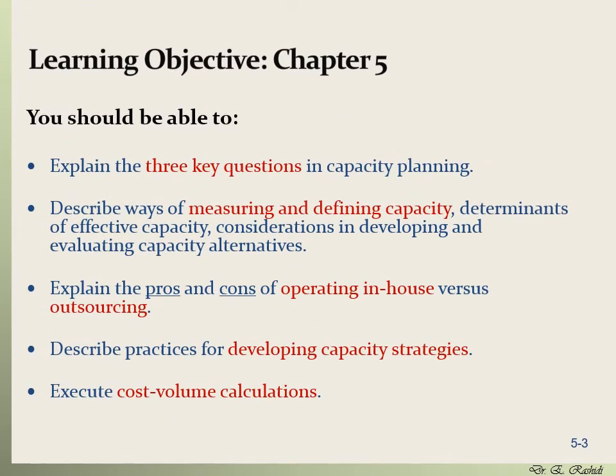The learning objective for chapter five is strategic capacity planning for products and services. By the end of this chapter, you should be able to explain the three key questions in capacity planning: what type of capacity we need, how much we need, and when do we need it.